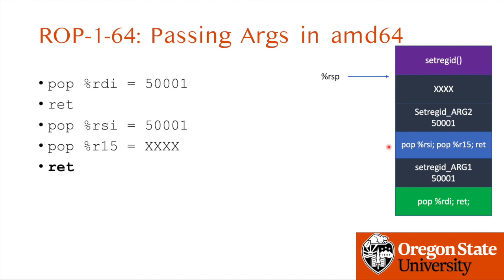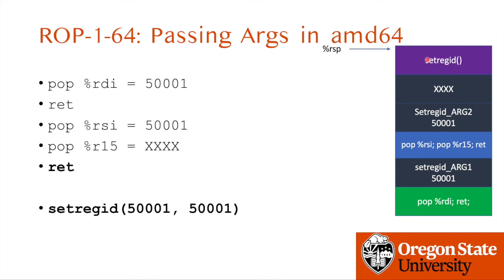The interesting point is that in 32-bit, we put the function address first and then put the arguments on the stack. But in 64-bit, we need to set all arguments first before calling the function. So what we do is find the corresponding pop instructions to set each argument: pop RDI first to load that value into the register, then pop RSI to set the next argument, and finally call setregid. If we have enough gadgets to pop all the registers and return, we can chain any number of functions like this.